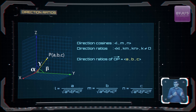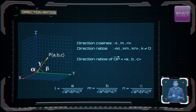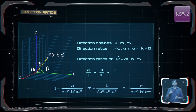Also, if A, B, C are direction ratios and L, M, N are direction cosines, then we can write: A/L = B/M = C/N = k, where k is a constant.